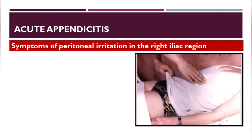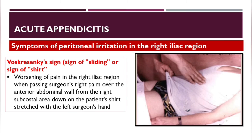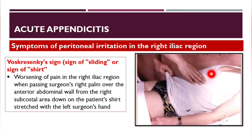Specific symptoms of peritoneal irritation on the right include the Shirt sign (sliding sign): the surgeon's left hand holds the shirt while the right palm slides down from the subcostal area along the anterior abdominal wall, producing worsening of pain.